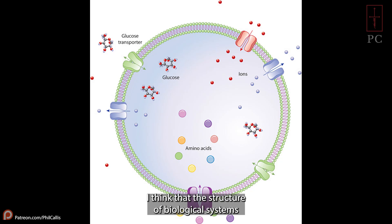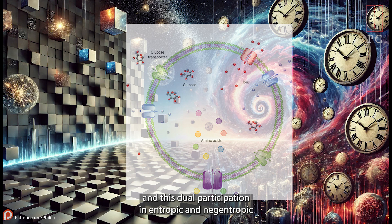I think that the structure of biological systems could locally participate in this ordering principle in a non-trivial way, and this dual participation in entropic and negentropic principles is what manifests as localized consciousness. But that's a whole other video.